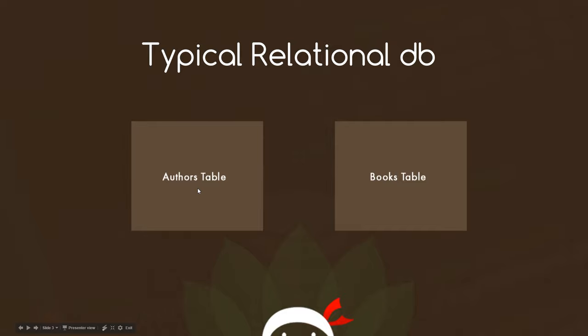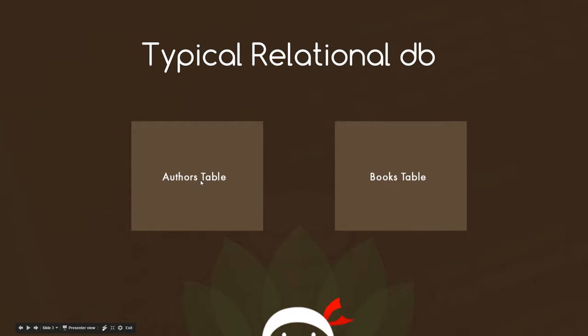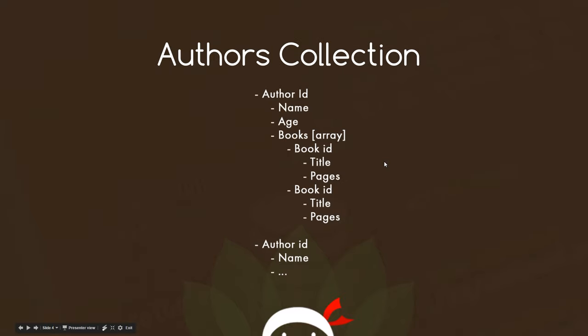We'd perhaps have an authors table and a books table. In the authors table we've got a list of authors with information about them, and in the books table we've got a list of books with information about them. We might have an author ID next to each one of these books so we can look up the author. That's how we would do it in a typical relational database, but with MongoDB we don't need to do that. We can just create one collection — authors — and then our related data we can nest inside this collection.